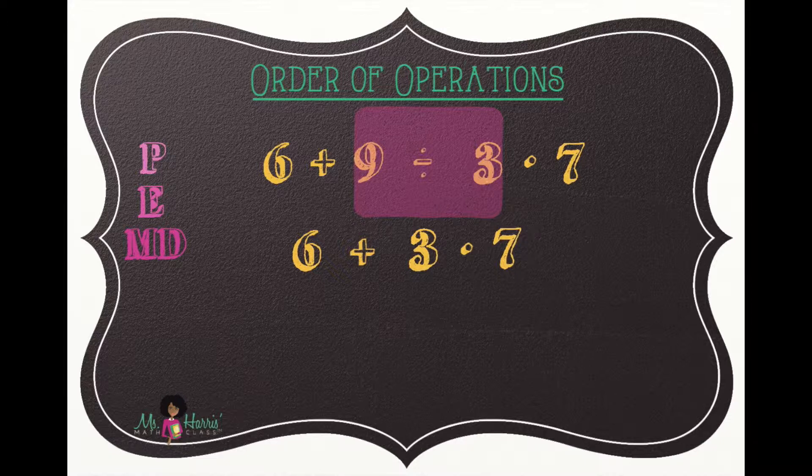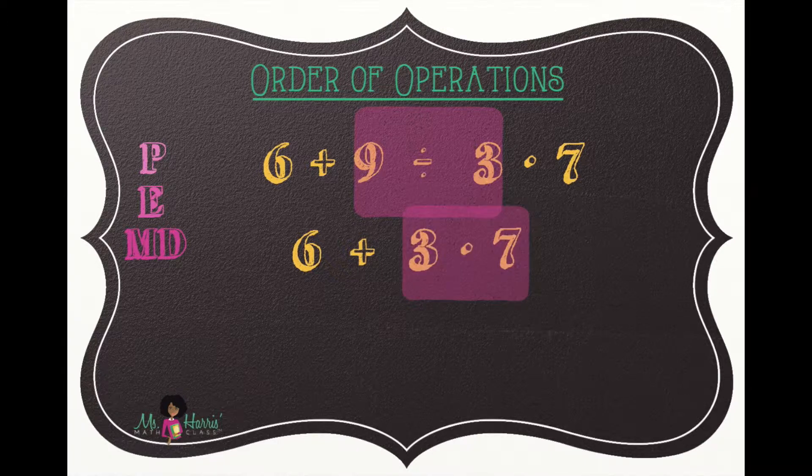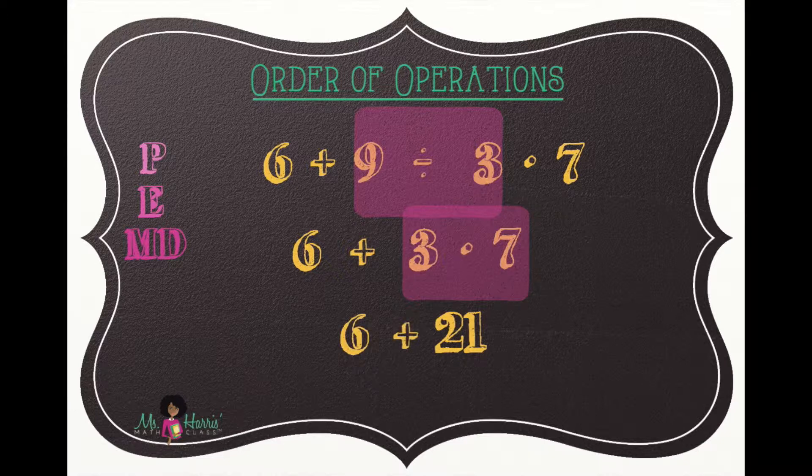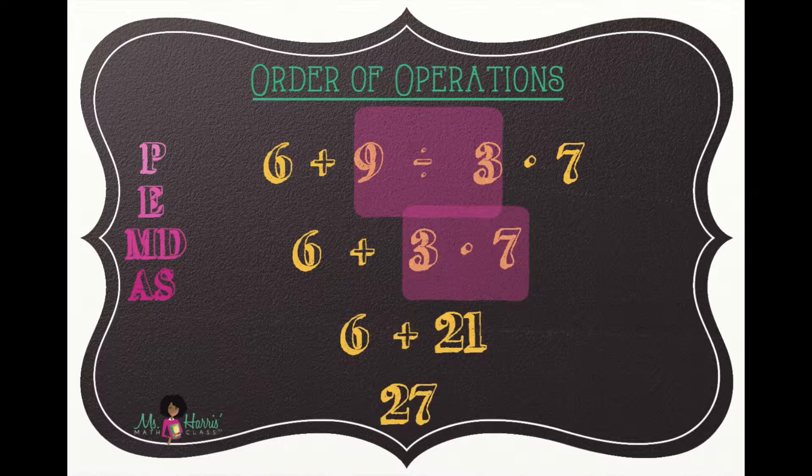We're still on our multiplication and division row, so we highlight three times seven, which is 21, and bring down the remaining numbers and operations. We move on to addition and subtraction. Six plus 21 is 27, so the correct answer is 27.